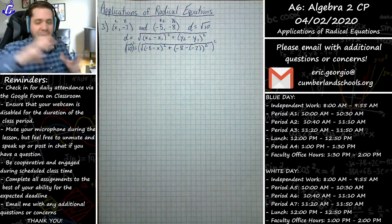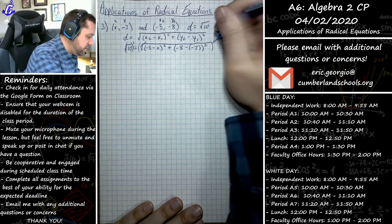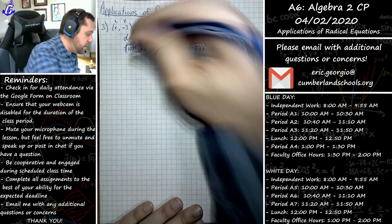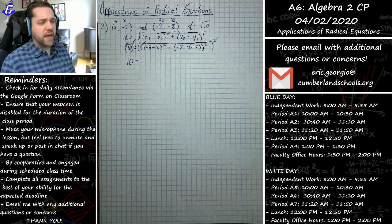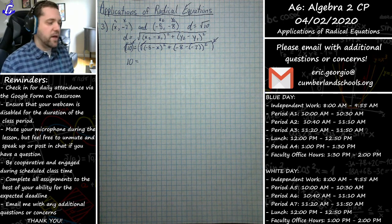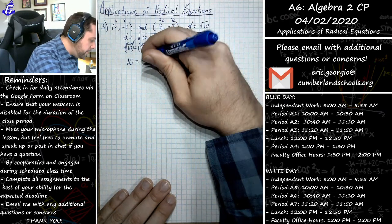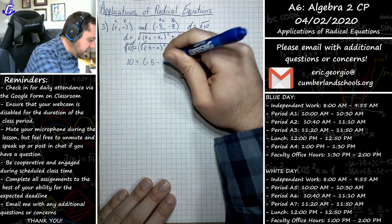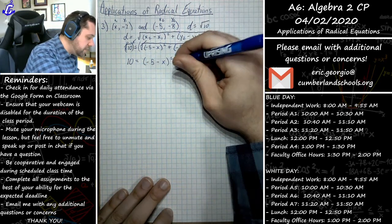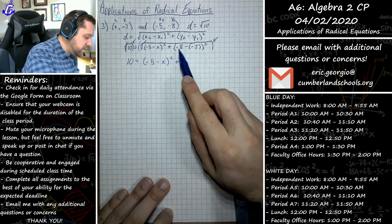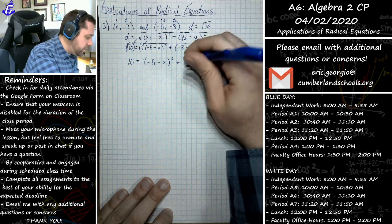Once we square both sides, the square root of 10 just becomes a regular 10. So we have 10 equals (negative five minus x) squared plus — here negative eight minus negative seven is negative one, and negative one squared is positive one — so plus 1.